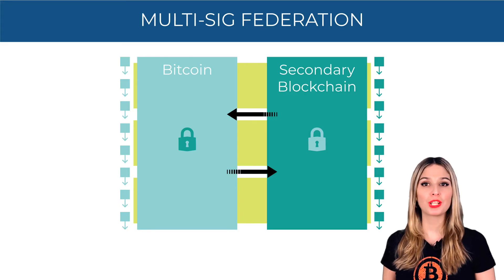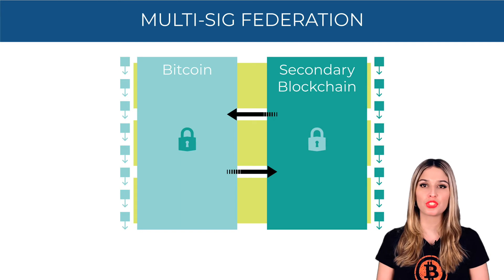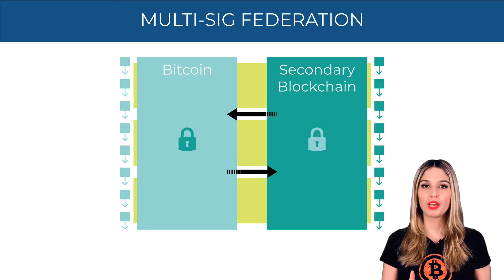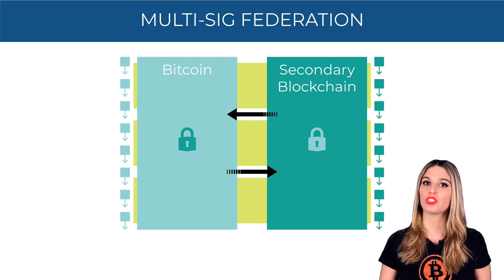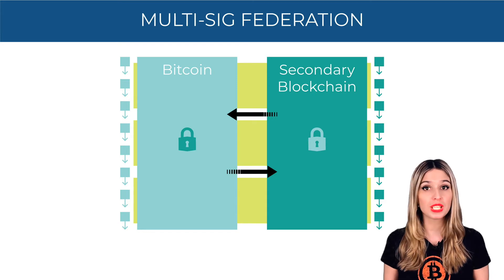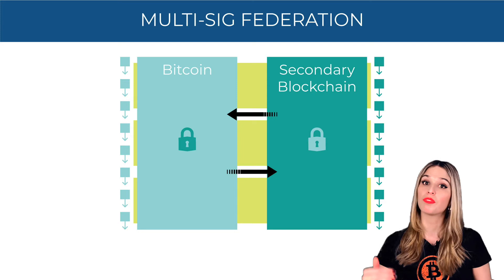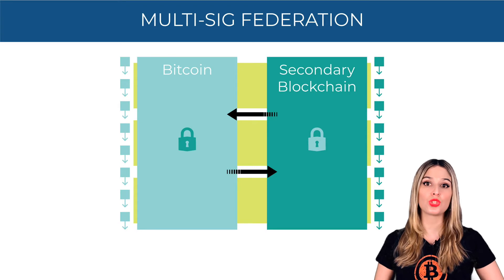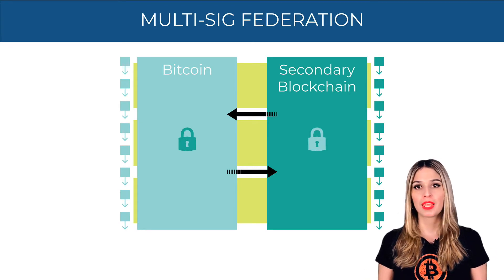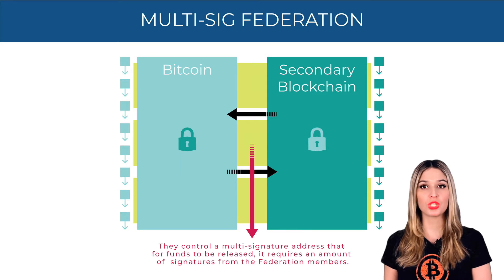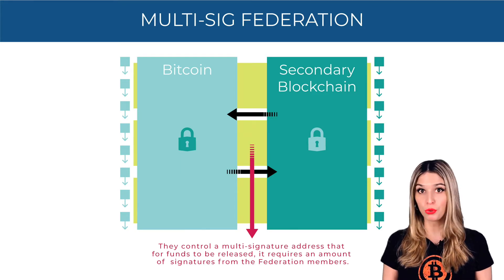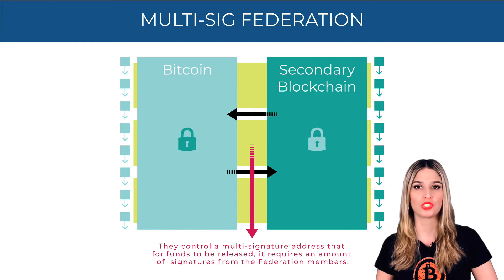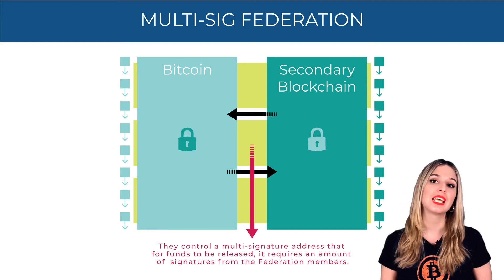In order for a two-way peg to work, both blockchains need to have information about each other in order to know when to lock or release the funds. One way of doing so is through a multi-signature federation — a group of notaries that serve as a middle layer between the main blockchain and the secondary blockchain. Their role is to vote algorithmically on whether to release or lock the funds. They control a multi-signature address requiring majority approval. The downside is that this can lead to centralization, so they need to be very carefully selected.